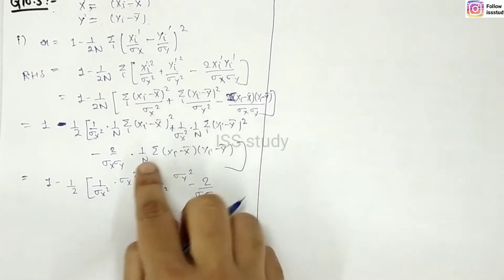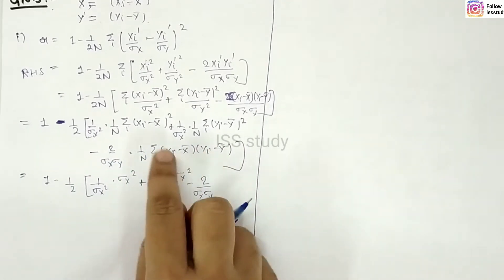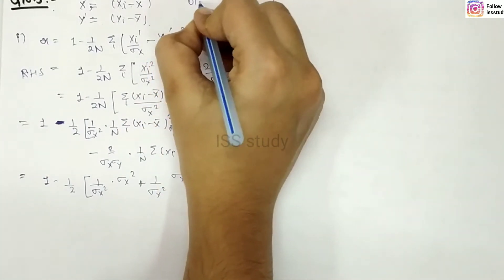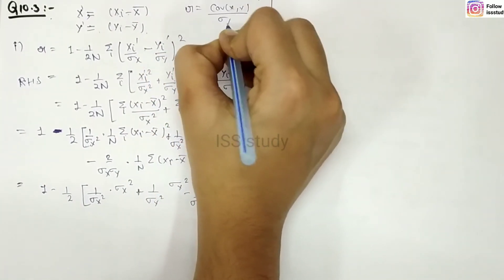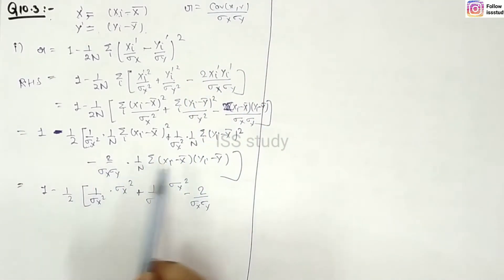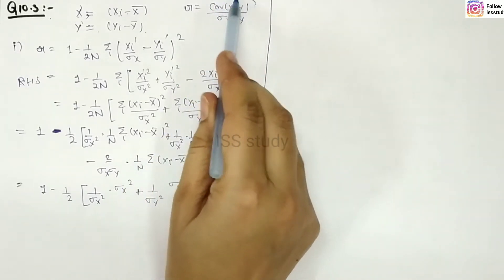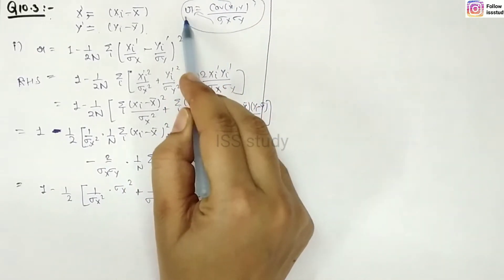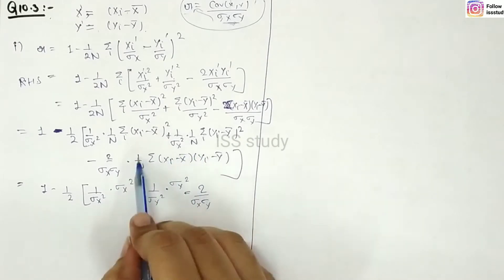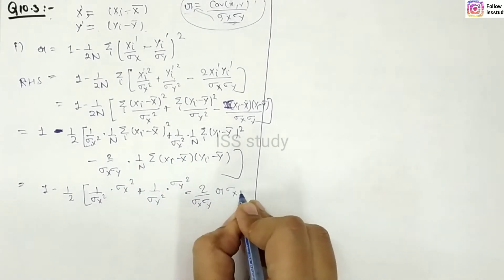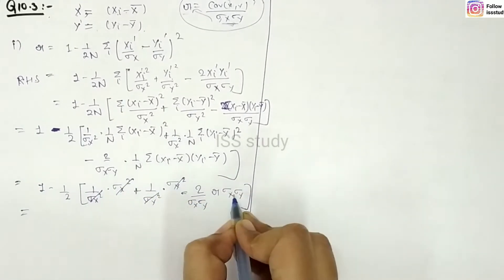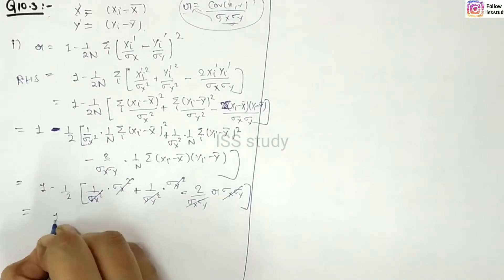Notice that this term is the covariance formula. And we know the correlation formula: r = cov(x,y) / (σ_x · σ_y). So covariance of x, y can be written as r·σ_x·σ_y. We substitute this in — putting it in the form of r·σ_x·σ_y — so terms cancel out: σ_x cancels, σ_y cancels, and the covariance terms reduce.